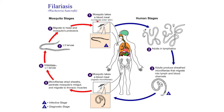A mosquito infected with L3 larvae takes a blood meal. The L3 larvae enter the skin while the mosquito feeds. Then the L3 larvae migrate into the lymphatics to become adults.